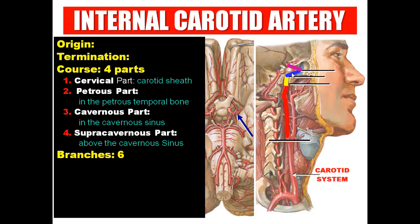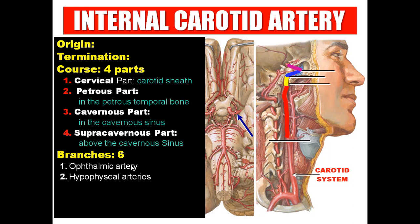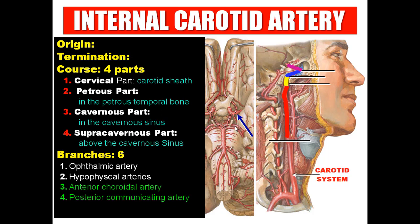The internal carotid artery gives several branches. First, the ophthalmic artery enters the orbit through the optic canal to supply structures in the orbit. Second, the hypophysial arteries supply the hypophysis or pituitary gland. Then, before the two terminal branches: the posterior communicating artery joins the posterior cerebral artery, and the anterior choroidal artery supplies the choroid plexus. Finally, the two terminal branches are the anterior cerebral and the middle cerebral arteries.